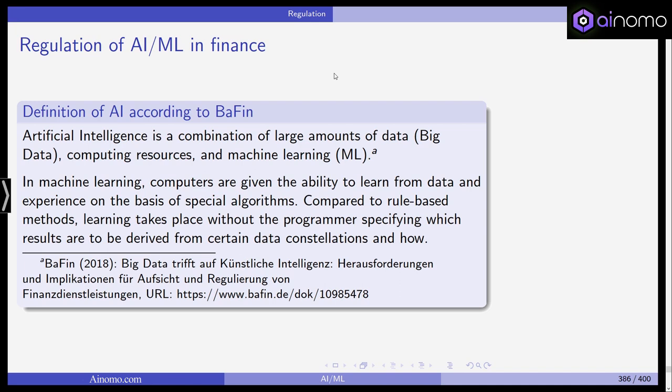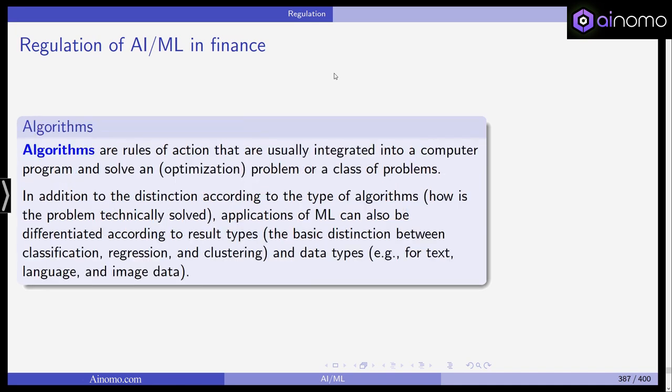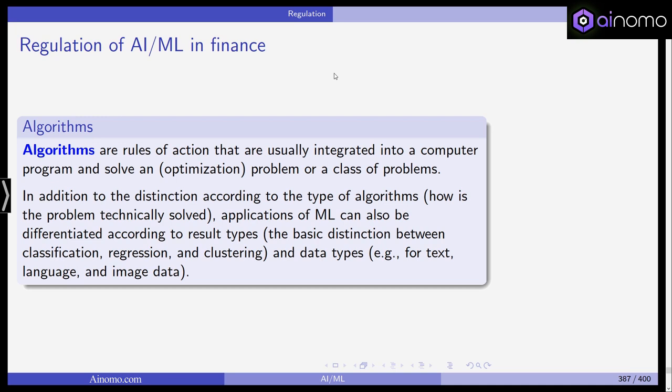So big data plus machine learning and high computational power — that's artificial intelligence in BaFin's definition. This is published not as regulation but as a newsletter summarizing their first ideas on what AI is, what it entails, and what they might do in the future regarding its regulation. BaFin also states that algorithms are rules of action integrated into computer programs that solve an optimization problem. Applications of machine learning can be differentiated according to result types — the basic distinction between classification, regression, and clustering — and data types.